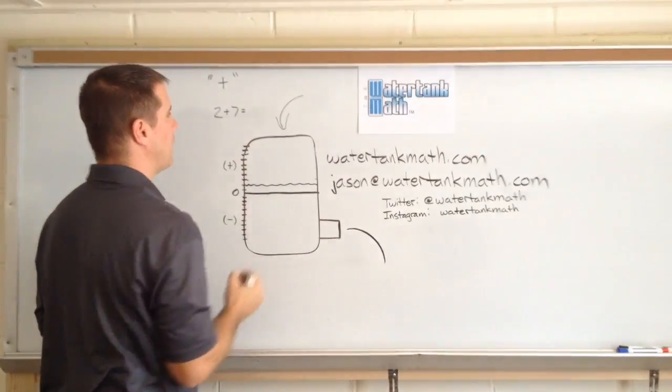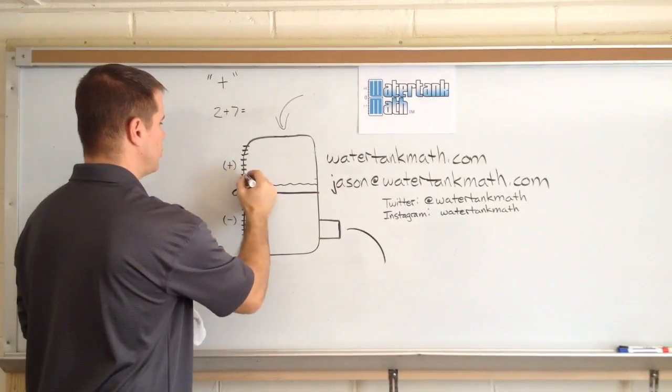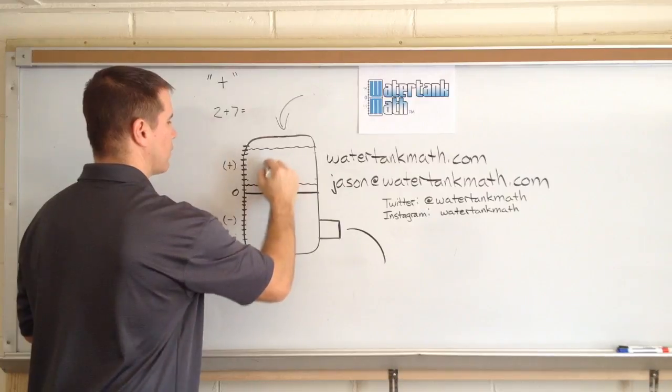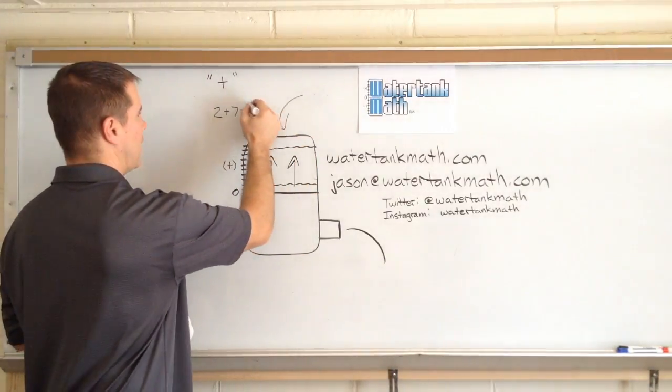So again, we're going to add water to the top of the tank. So the water tank, the toilet is going to fill up from the bottom. So I'm going to go up 7 units: 1, 2, 3, 4, 5, 6 and 7. The water level is going to rise because I'm filling from the top and I can see that it ends up at 9.